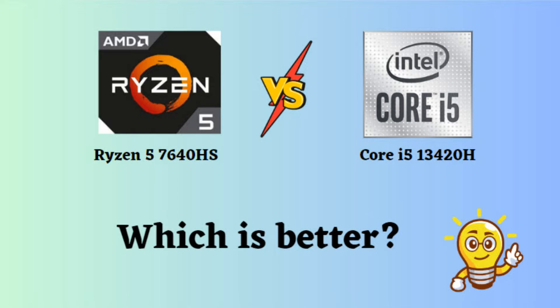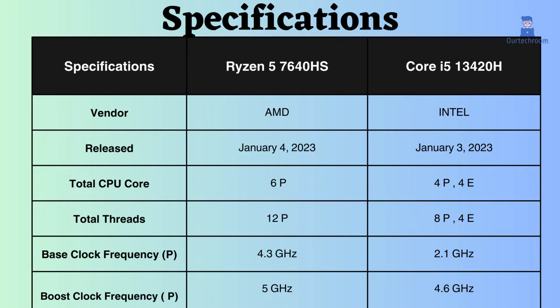In this video, I will compare the AMD Ryzen 5 7640HS vs Intel Core i5-13420H, highlighting their differences, and then provide a conclusion to help you determine which one is the better choice. Both of these processors are mid-range processors released in the same month and year.